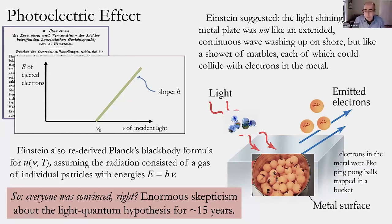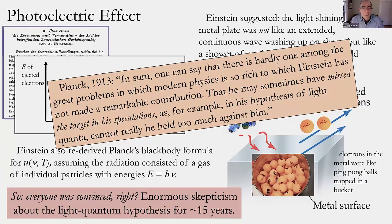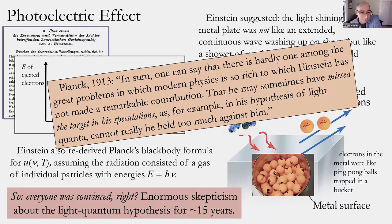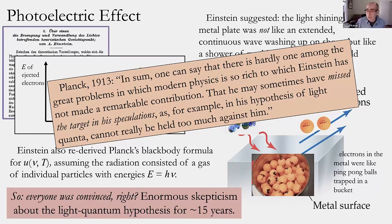You might think: he solved everything, everyone was convinced — but no. Einstein was still a little-known patent clerk, out of the main elite centers of research, and this idea faced enormous skepticism. It was more than 15 years until the majority of physicists took it seriously. Here's our old friend Max Planck, writing a letter of recommendation for Einstein in 1913, trying to say how great Einstein's work is, yet writing: 'he may sometimes have missed the target in his speculations, as for example in his hypothesis of light quanta, but that cannot really be held too much against him.'